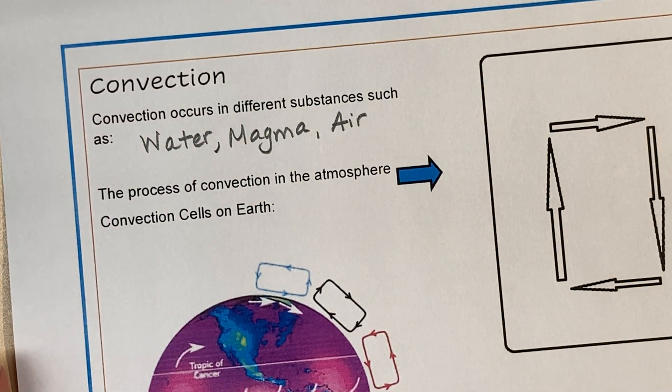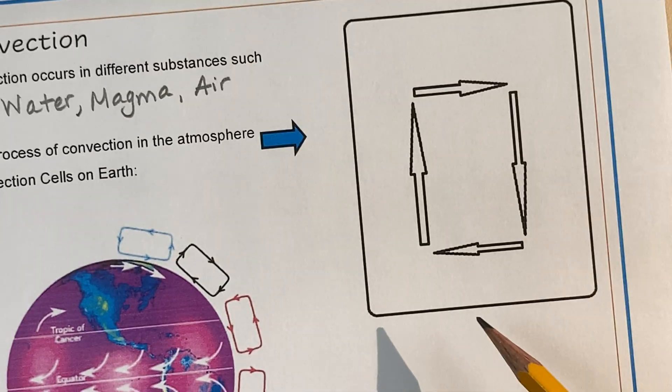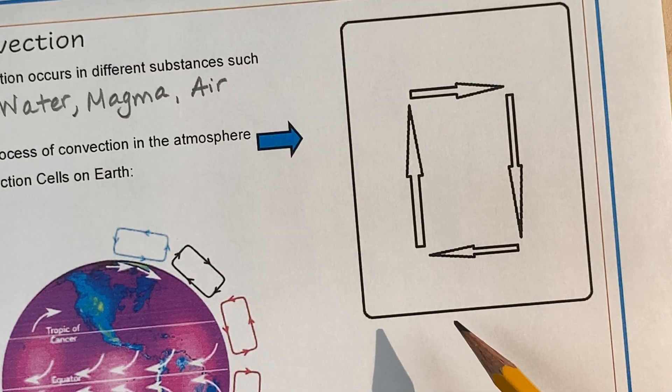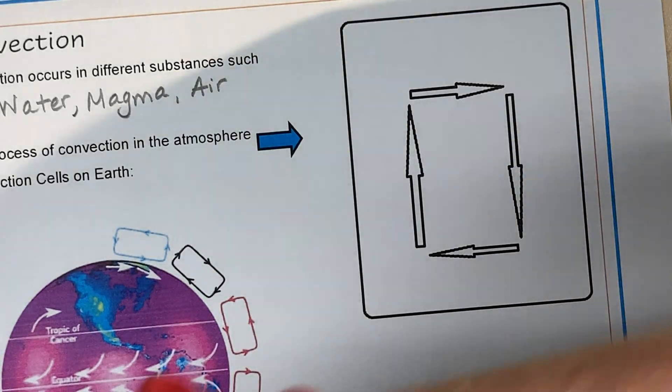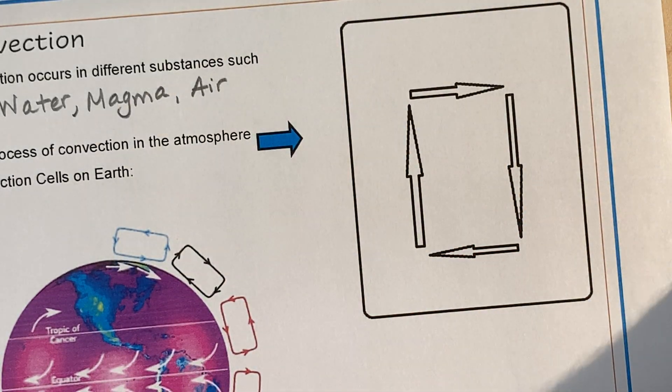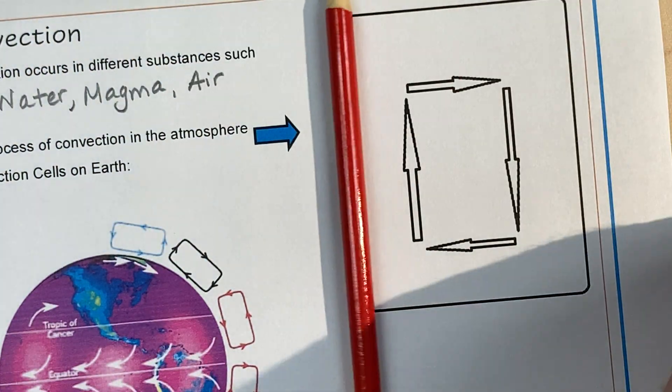Right now with atmospheric notes, we're going to be most concerned about the air. So here is the process of convection. This is where your colors will be helpful. If you have a red and blue or even orange is fine.